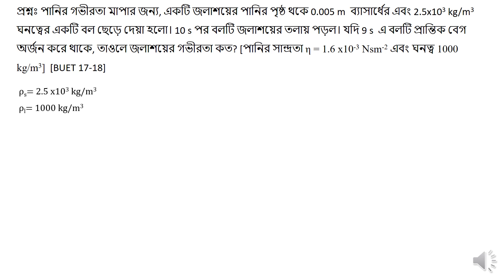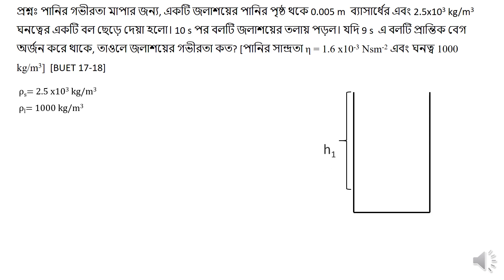The density rho_s is equal to 2.5 into 10 to the power 3 kg per meter cube. The density rho_l is equal to 1000 kg per meter cube. The radius r is 0.005 meters, and rho_s is 2.5 into 10 to the power 3. The time is 10 seconds. Another radius value is 0.006 meters.